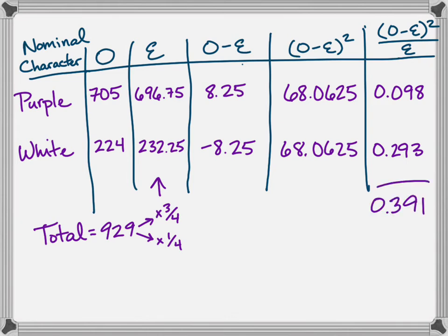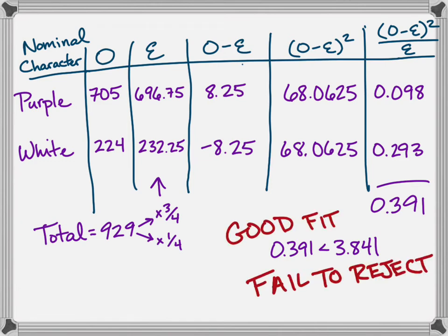Take these numbers, add them up. It's a very small number. That number is less than 3.841, and so think about it. Is it a good fit? Do we fail to reject? Yes, it is a good fit, and we fail to reject.